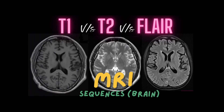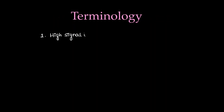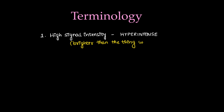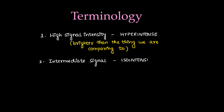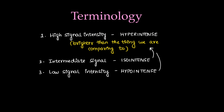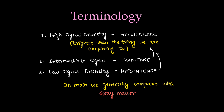In this video we learn how to differentiate the MRI sequences of brain: T1, T2, and FLAIR. We'll cover the terminology used in MRI reports. High signal intensity is called hyper-intense — it's brighter than the structure being compared. Intermediate signal is called iso-intense, and low signal intensity is called hypo-intense. In the brain, we generally compare intensity with gray matter on all sequences.